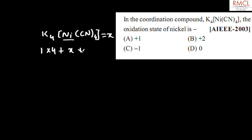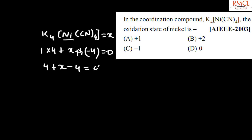CN contributes minus 1, so minus 4, equals 0. So the equation becomes: 4 plus X minus 4 equals 0. Therefore X equals 0. So the correct answer for this question is option D.